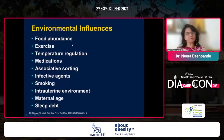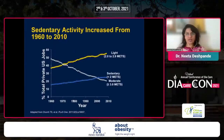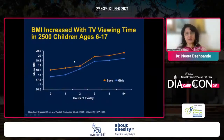The environmental factors include food abundance, junk food, exercise access, medications, infective agents, smoking, intrauterine environment and epigenetics, maternal age, and lack of sleep. For example, sedentary activity has increased from 1960 to 2010 — light activity has increased and moderate activity has come down. Exercise levels have come down, sedentariness has increased, and consequently BMIs have started to increase. TV viewing time has increased in children aged 6 to 17, and BMIs have increased because of this sedentary behavior.